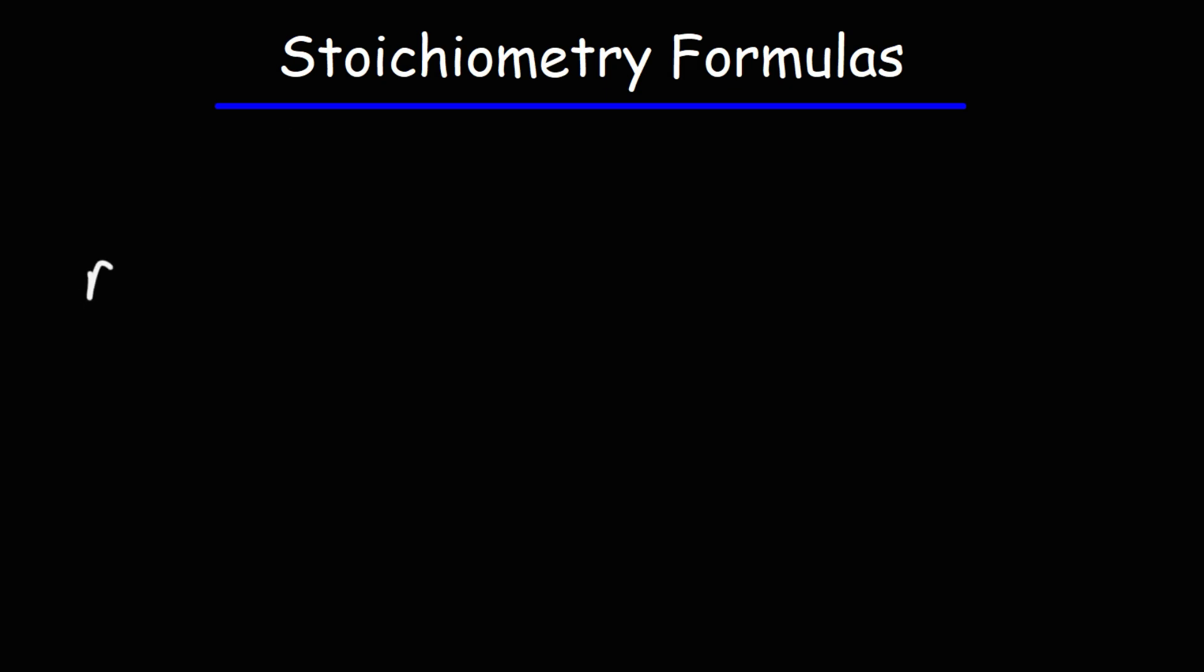So here's the first one: n, which represents the number of moles, is equal to the mass in grams divided by the molar mass or the molecular weight of the compound in grams per mole. So I'm just going to put the units here. This is in grams, this is in grams per mole, and you'll get this in moles.